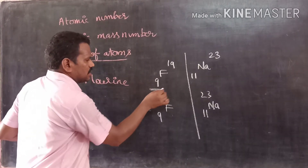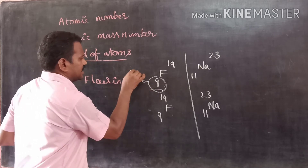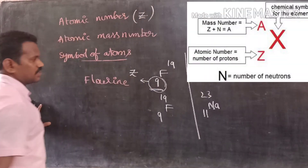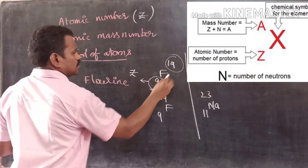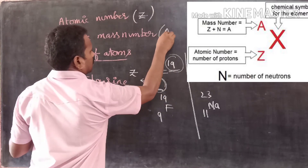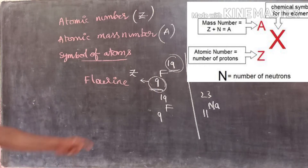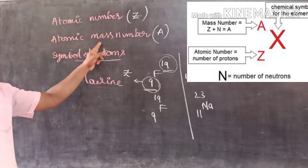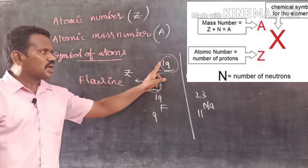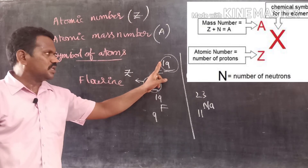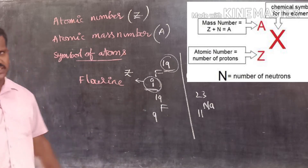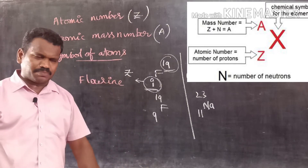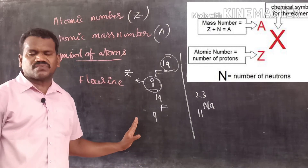What is this subscript? Generally, the subscript indicates the atomic number, which is represented by the letter Z. What is this superscript? The superscript indicates the mass number, represented by the letter A. The atomic mass number is written at the topmost position of the symbol, either on the right-hand or left-hand side, while the atomic number is written as subscript on the left-hand side of the symbol E.